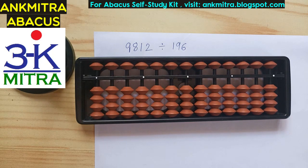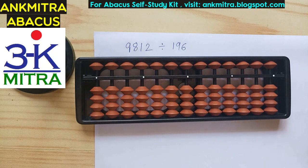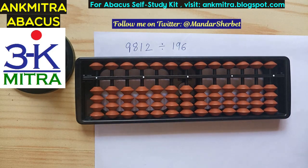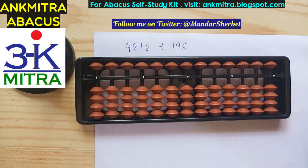This kind of division is actually better done with the reduction method first. If we are using pen and paper, we can reduce the numerator and denominator by some common factor and then do the final division on the abacus. But let's consider that we don't have the facility of pen and paper and we are supposed to do this division entirely on the abacus.